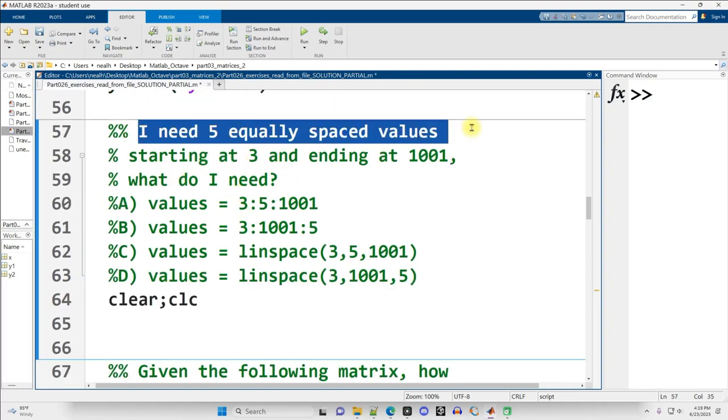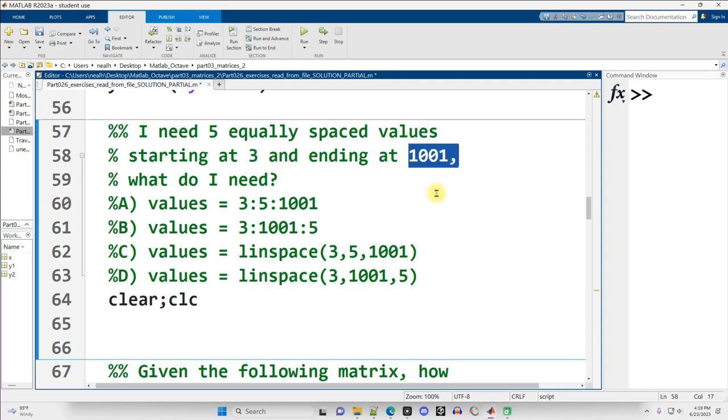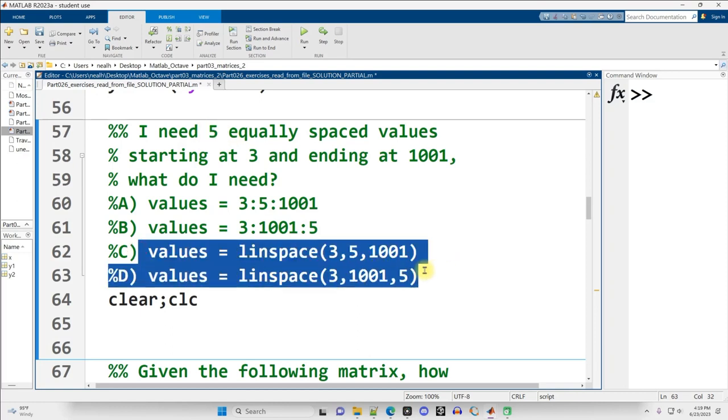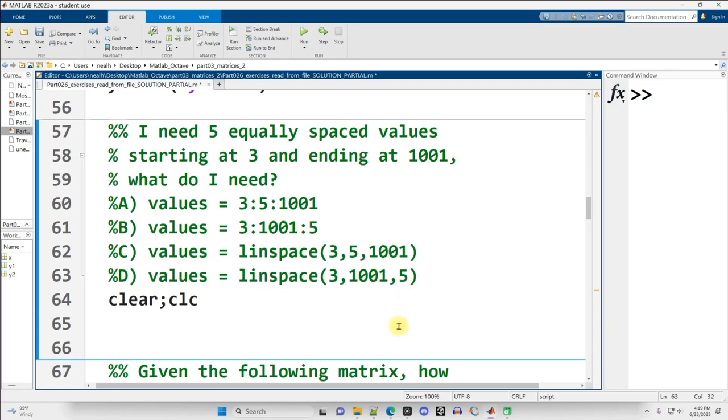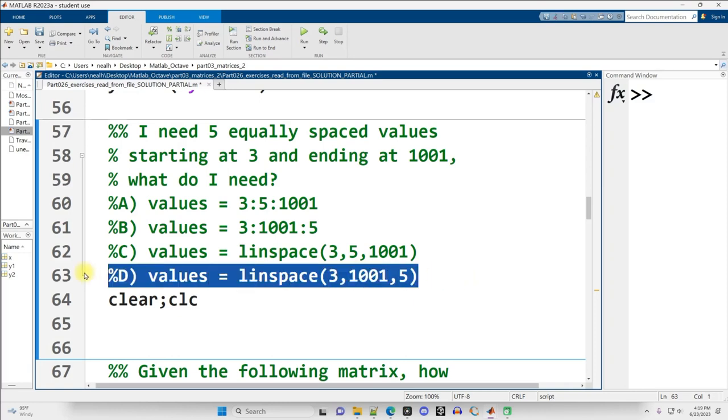Continuing on down. I need five equally spaced values starting at 3, ending at 1,001. What do I need? Which of these four options? Well, since I need five total values, I need one of the lin spaces. So I either need C or D. Now, the order in which linspace takes its inputs is the starting value, the ending value, and then how many total you need. So D is the correct answer. And you can run that code for yourself if you'd like to verify.